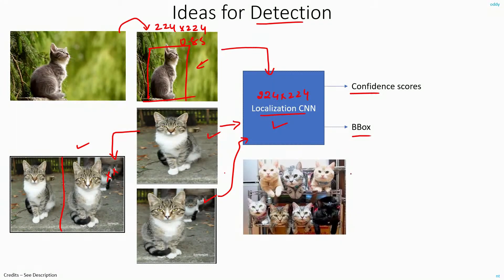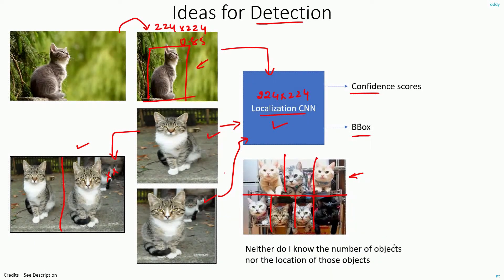But what happens if the input image has objects in different positions? You can begin to imagine there is no general solution for taking the crops, because neither do I know the number of objects nor their locations beforehand. So it's impossible to decide exactly how to take crops and give them as input to the localization network. This is a problem.